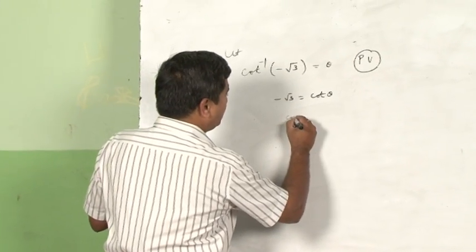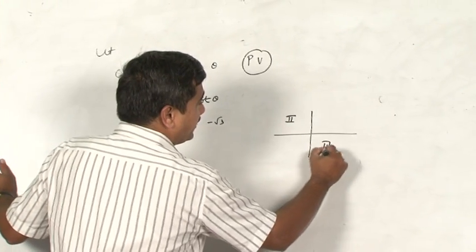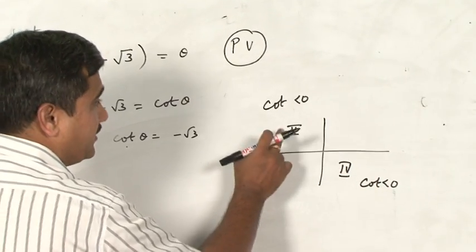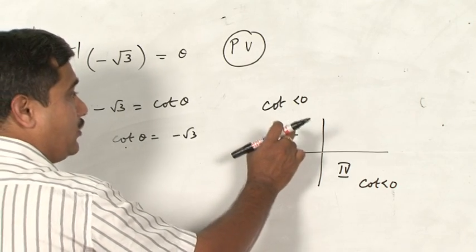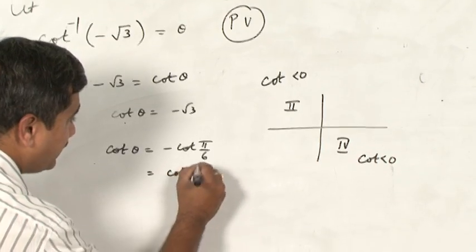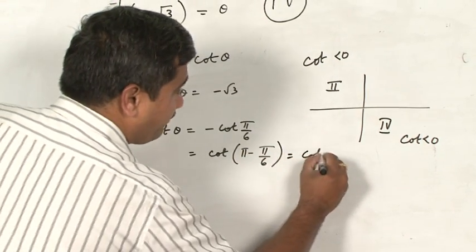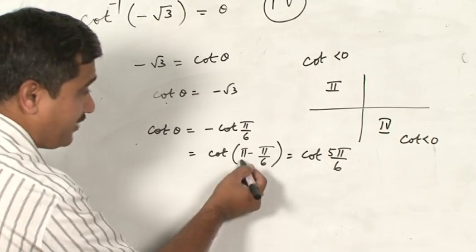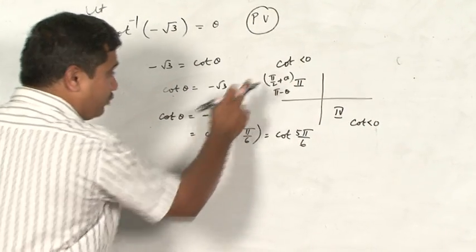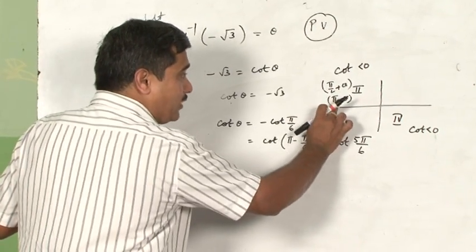Now cot θ = -√3. Cot is negative in the second and fourth quadrants. Since the second quadrant comes before the fourth, we take a reference angle from quadrant 2. We write cot θ = -cot(π/6) = cot(π - π/6). Note that we choose π minus θ rather than π/2 plus θ in the second quadrant, because using π/2 would bring a change in the cot function — which we must avoid.